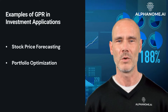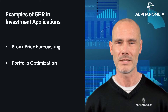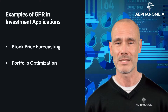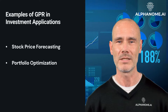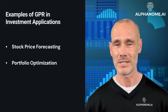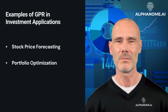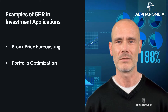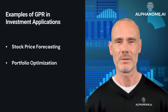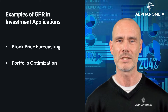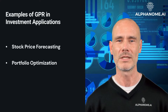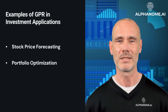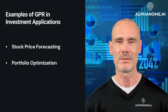For example, an investor can employ GPR to predict the expected returns and volatilities of various asset classes — stocks, bonds, commodities, etc. — based on historical data and macroeconomic indicators. These predictions can then be used in portfolio optimization algorithms to determine the optimal asset allocation that maximizes returns while minimizing risk.